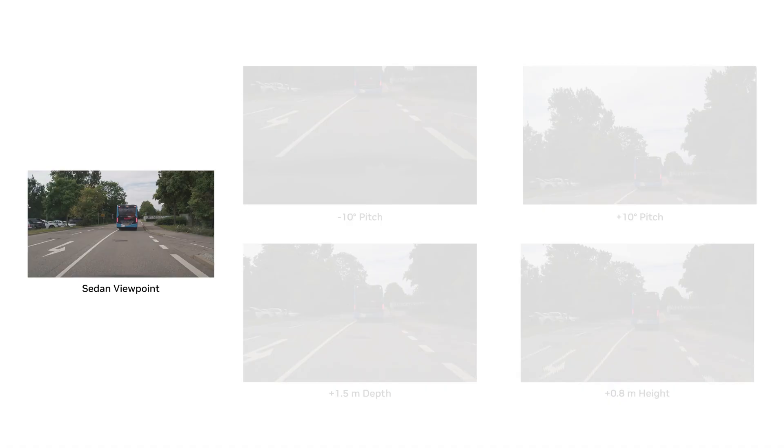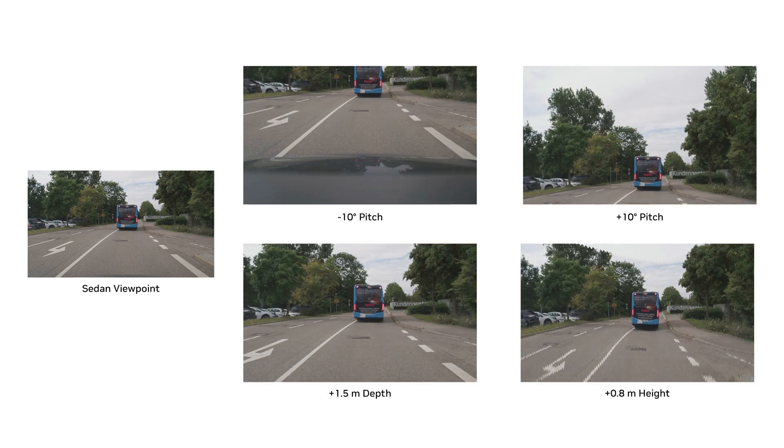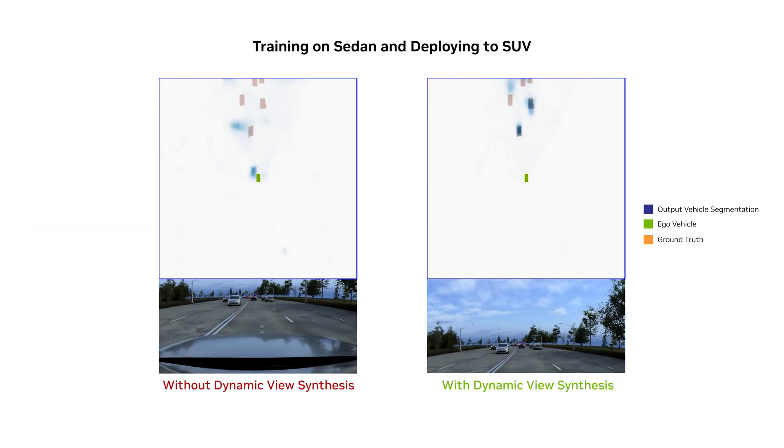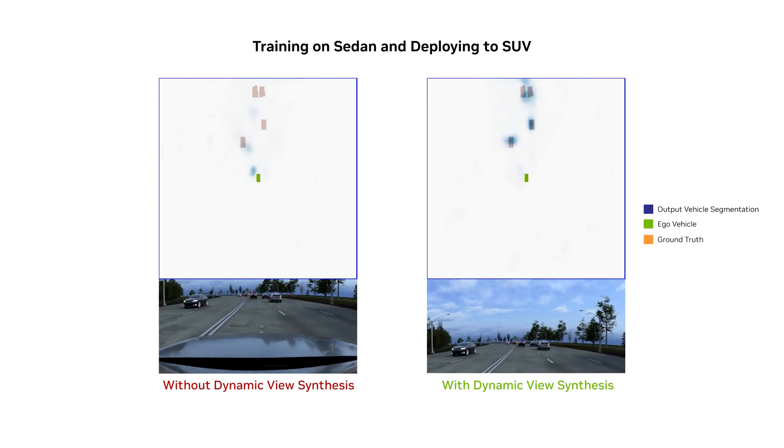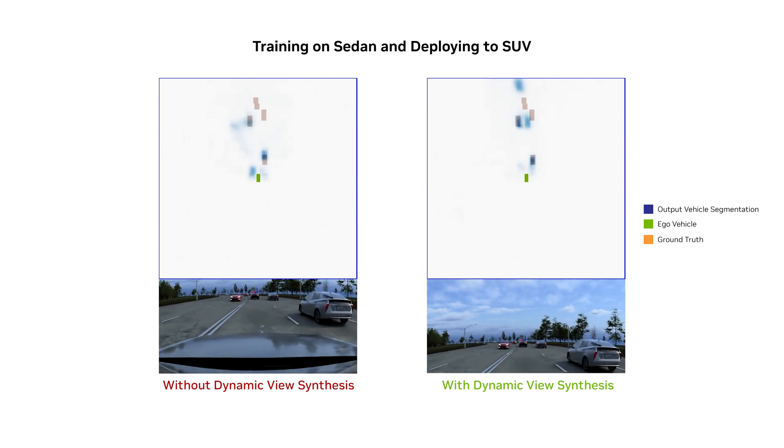Here, we show resulting images synthesized from different camera pitches, depths, and heights using dynamic view synthesis. Using this data in training, the perception model can improve prediction accuracy despite changes in sensor positions.